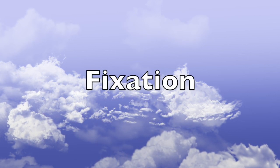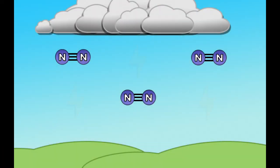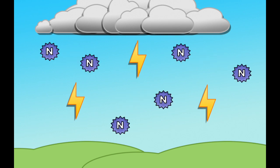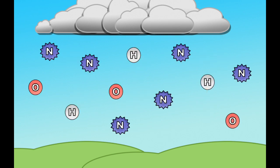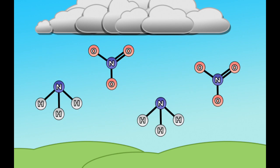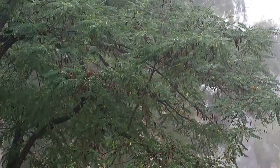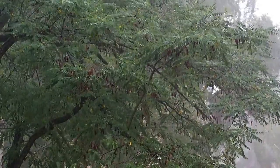The first of these, nitrogen fixation, happens in both the soil and in the atmosphere. In the atmosphere, the intense heat and energy of lightning will break the triple bond of the nitrogen gas and separate the atoms. The now free nitrogen atoms will then react with other elements in the atmosphere, such as oxygen and hydrogen, to form compounds such as ammonia and nitrates. The new nitrogen compounds are then carried down into the soil by rain.